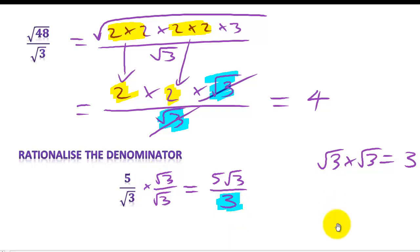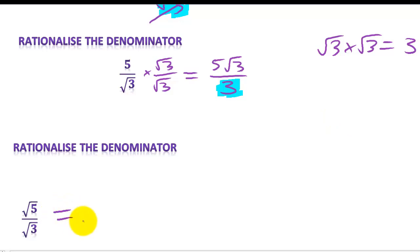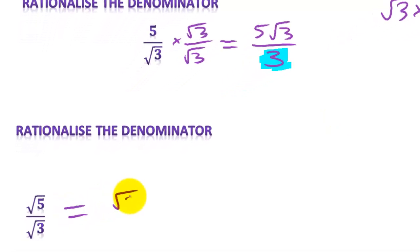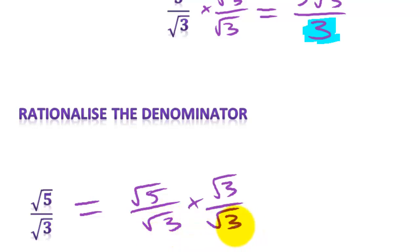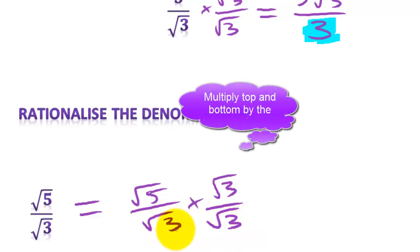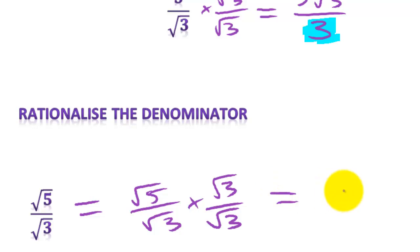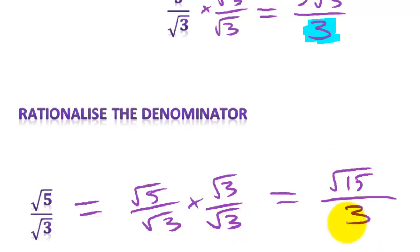Here we do exactly the same: we write root 5 over root 3, multiplied by root 3 over root 3. We choose the square root of the denominator to make it turn into a perfect square giving a whole number. Root 5 times root 3 is root 15, and root 3 times root 3 is just 3. We can't cancel these down — 3 doesn't go into root 15 unless we can take 3 out of the square root, which we can't. So the answer is root 15 over 3.